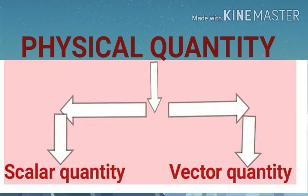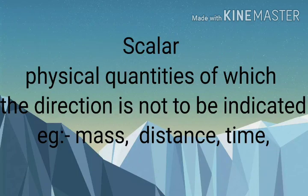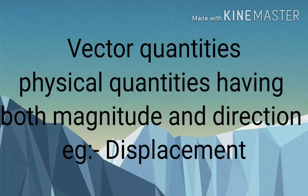Physical quantities are classified as scalar quantities and vector quantities. Scalar quantities do not require direction — examples include mass, distance, and time. But vector quantities have both magnitude and direction — for example, displacement.